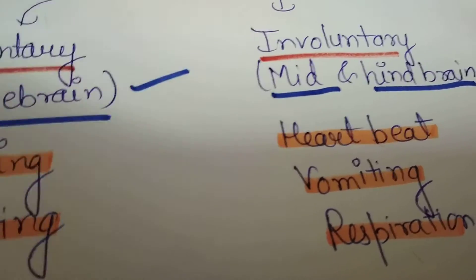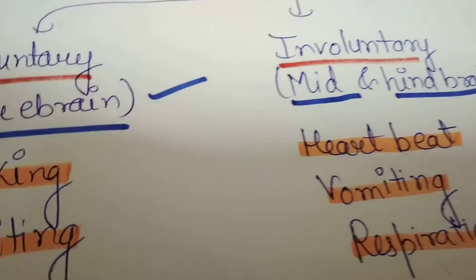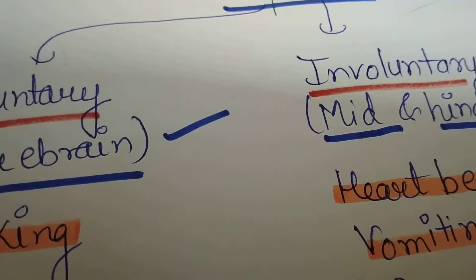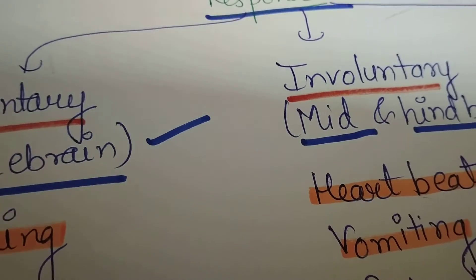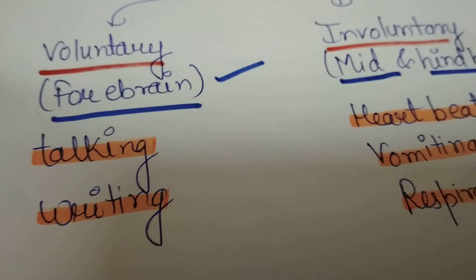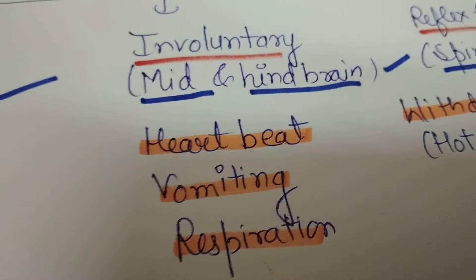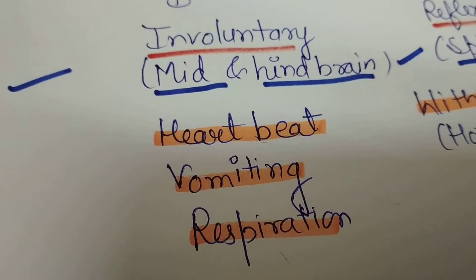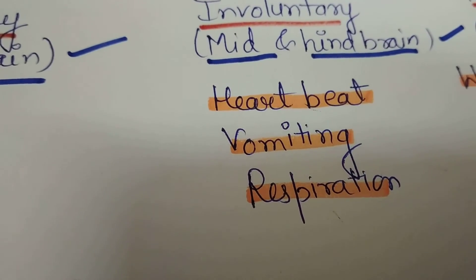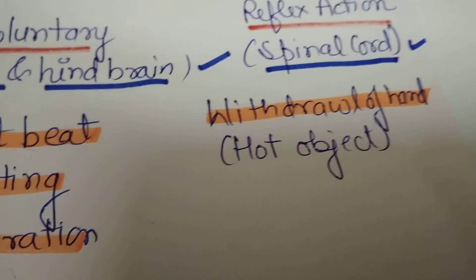जैसे मैं अपने आप को control करके बोल रही हूँ — यह voluntary है। लेकिन अगर किसी ने मुझ पर ठंडा पानी डाल दिया तो मैं एकदम से भाग जाऊंगी — यह involuntary और reflex action है। Voluntary response is controlled by the forebrain — for example, talking and writing. Involuntary response is controlled by mid and hindbrain — like heartbeat, vomiting, and respiration. Reflex action is controlled by the spinal cord.